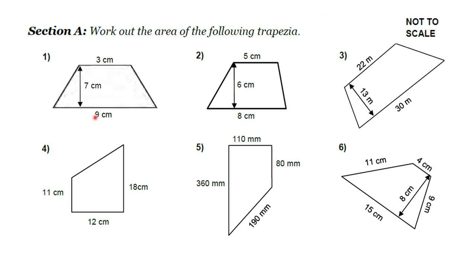The formula for the area of a trapezium is half of your parallels added together. We call these a and b times by the height, so the bit that connects those parallels.